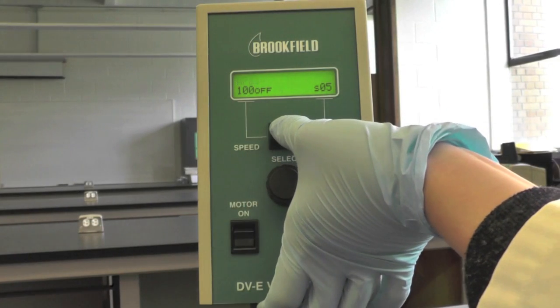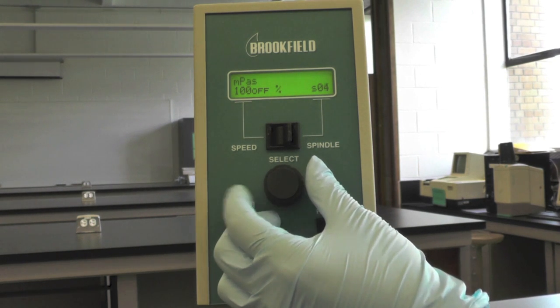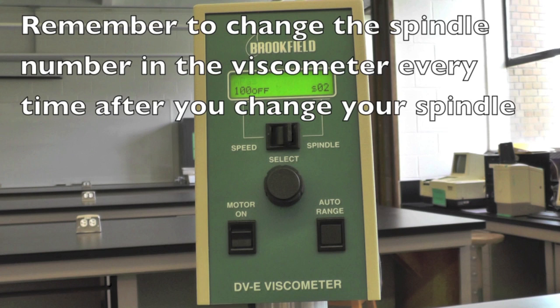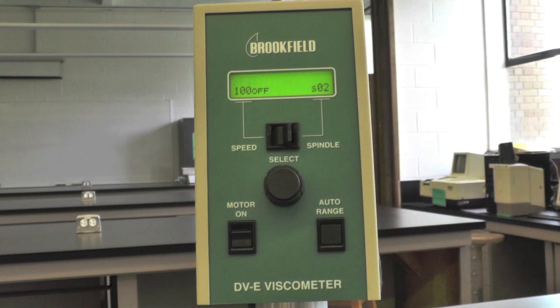Change the spindle number shown on the display by flipping the spindle/speed switch towards spindle and spin the wheel to the corresponding number you've chosen. Then flip the switch back to the middle.